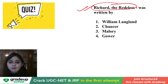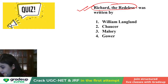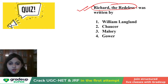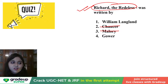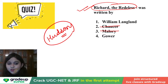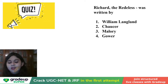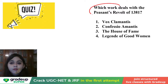Richard the Redless was written by — this is very important, asked sometimes in your teaching exams. Langland is the correct answer. Langland is the author of Richard the Redless. Please remember, Langland is writing about the working classes — the classes which were ignored by Chaucer. Hudson says Chaucer was not writing about everyone; those people are getting covered by William Langland.